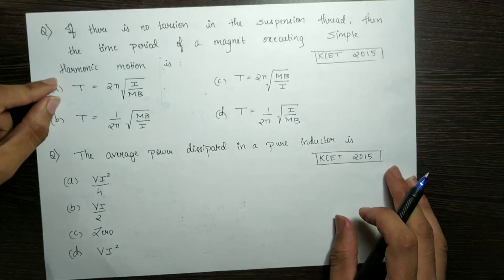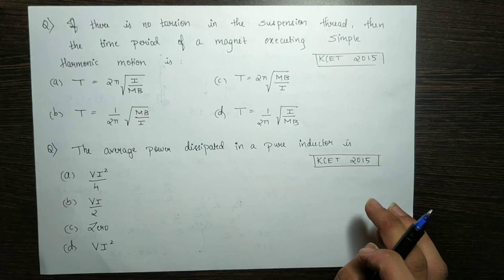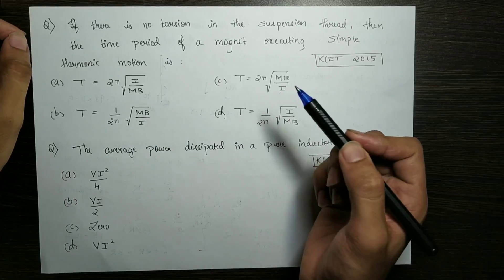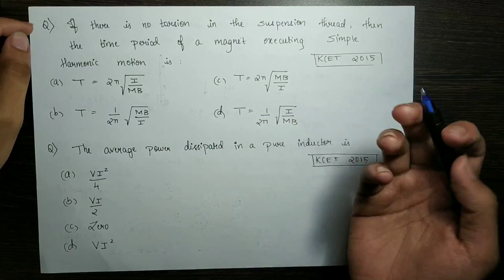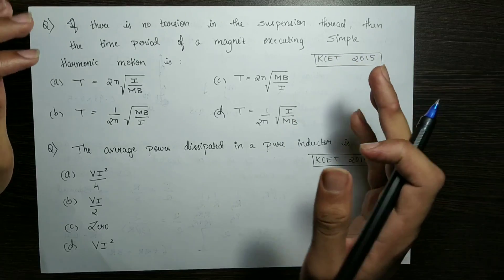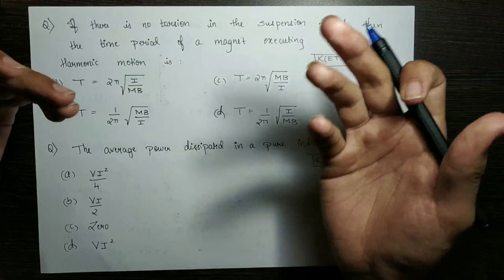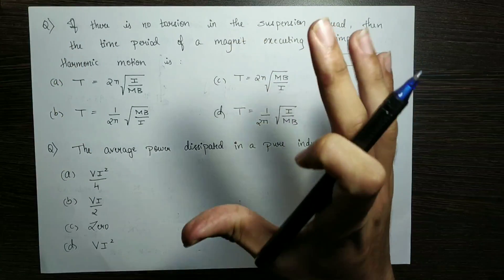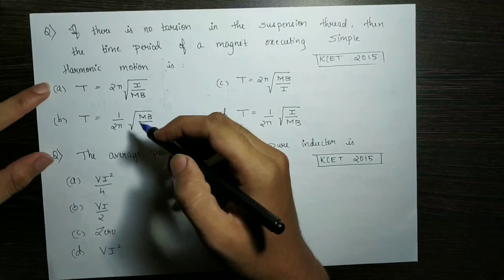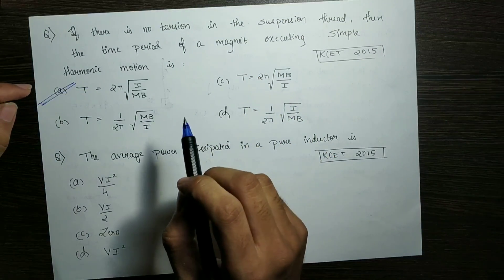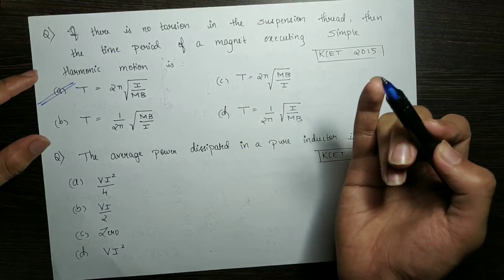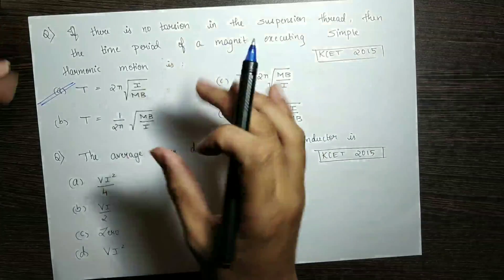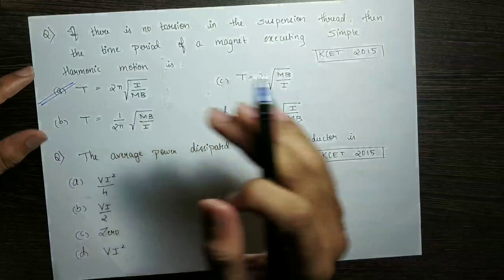Next question: if there is no torsion in the suspension thread, what is the time period of the magnet executing simple harmonic motion? One bar magnet executes simple harmonic motion. If there is no torsion in the string, the formula from basic NCERT is T = 2π√(I/MB), where I is the moment of inertia, M is the magnetic moment, and B is the magnetic field.